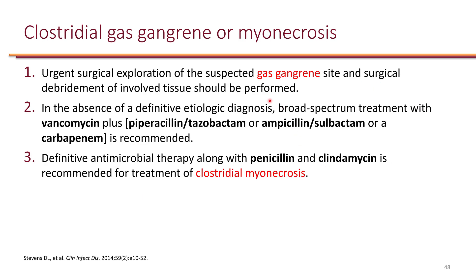For clostridial gas gangrene or myonecrosis, the key difference from necrotizing fasciitis is that necrotizing fasciitis is driven by streptococci while gas gangrene is caused by clostridial species, most commonly Clostridium perfringens. The recommendation is urgent surgical exploration when gas gangrene is suspected. Broad-spectrum empiric treatment is used — vancomycin plus something with anaerobic coverage: pip-tazo, ampicillin-sulbactam, or carbapenem. Definitive treatment, once clostridial myonecrosis is confirmed, is penicillin plus clindamycin.